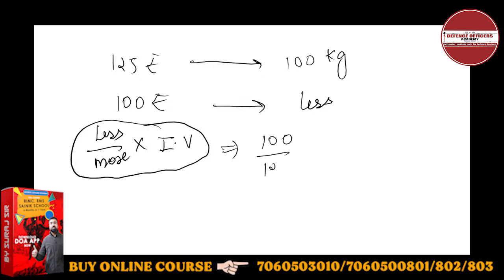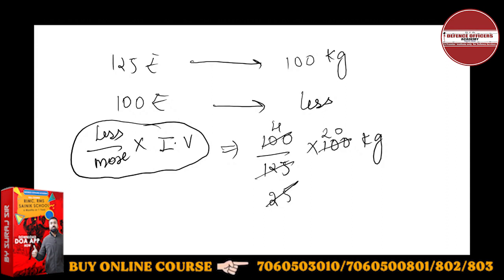Less is 100, more is 125, into 100 kg. Calculating: 100 divided by 125, multiplied by 100 kg equals 80 kg. So now with 100 rupees, I am getting only 80 kg of sugar, not 100 kg. The formula is less by more into individual value — 100 by 125 into 100 kg — and you get 80 kg.